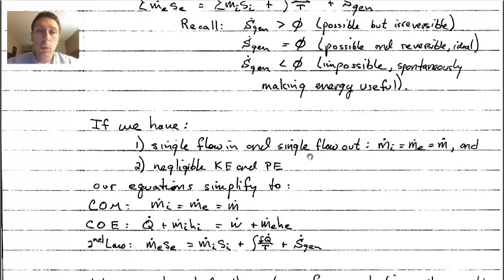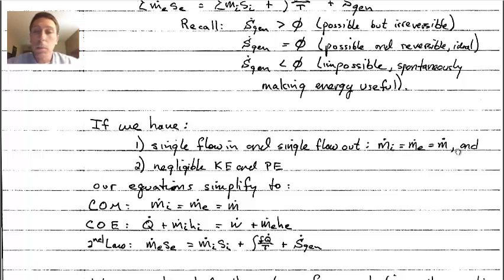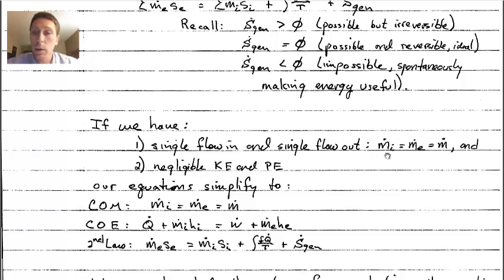We simplify these equations for common cases like turbines and compressors. For a single flow in and single flow out, there's no summation on either side, so we say m-dot-i equals m-dot-e, and since it's the same mass flow rate we drop the subscripts and just call it m-dot. Another common simplification is negligible kinetic and potential energy — negligible changes in velocity or elevation of the flow.